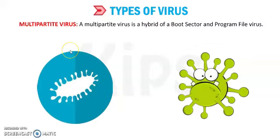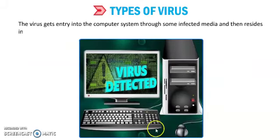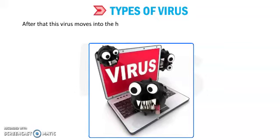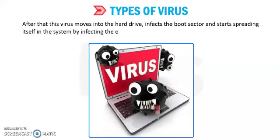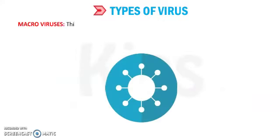The next type of virus is multipartite virus. These viruses enter the computer system through some infected media and reside in it. After that, the virus moves into the hard drive, infects the boot sector, and starts spreading itself by infecting executable files. Multipartite virus is a hybrid of boot sector and program file virus, entering through infected media and residing in computer memory. Examples include Invader, Flip, and Tequila.